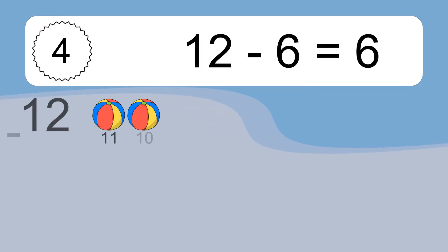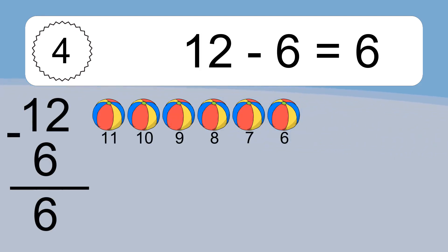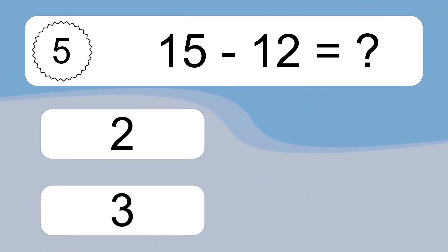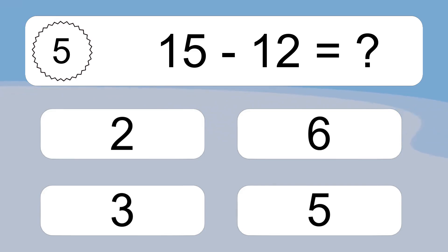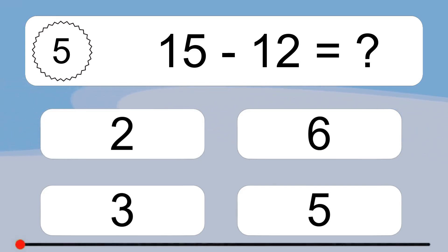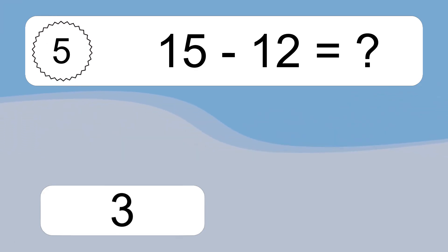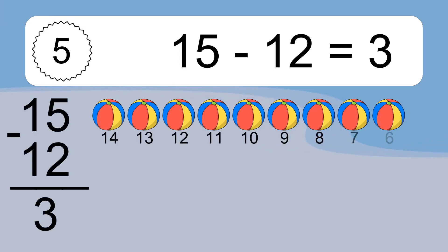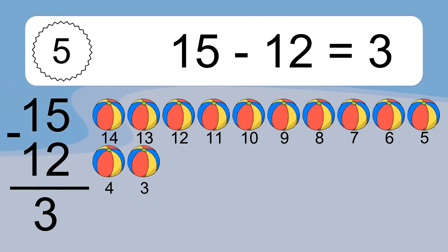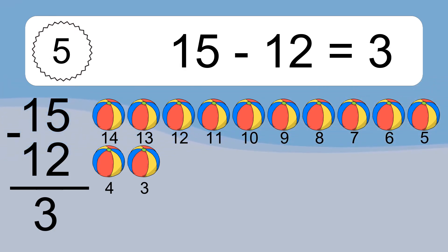12 minus 6 equals 6. Let's count it: 11, 10, 9, 8, 7, 6. 15 minus 12 equals what? 15 minus 12 equals 3. Let's count it: 14, 13, 12, 11, 10, 9, 8, 7, 6, 5, 4, 3.